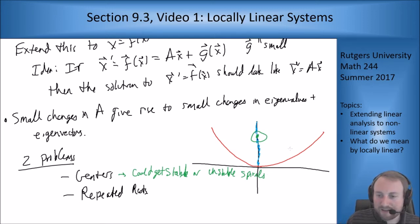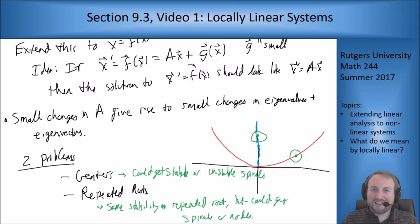For the repeated roots case if I start on the line here I'm going to end up somewhere nearby. If I nudge A a little bit I end up somewhere nearby. Now in the next case I'm going to get the same stability as the repeated root but I could get spirals or nodes.